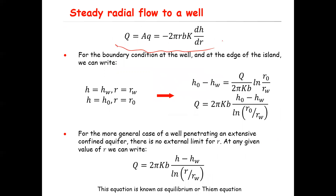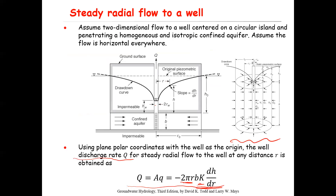You can rearrange this equation, express dh as a function of dr, and take the integral. This is a relatively straightforward integral. There are two boundary conditions: at r = r_w, h = h_w, and at r = r₀ (the edge of the island), h = h₀.